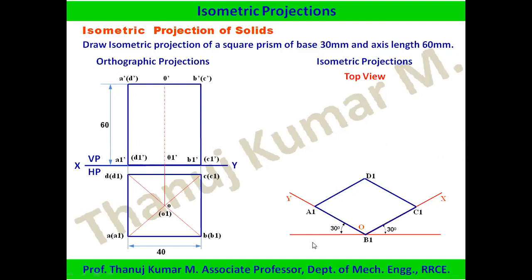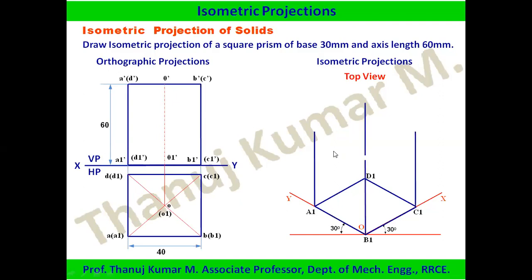After drawing the base, we draw the front portion. The height is 60 mm — taken from A1-dash to A-dash in the orthographic view. This is converted as 60 mm × 0.8164 for the isometric projection. This reduced height is drawn on all four corners as vertical lines.